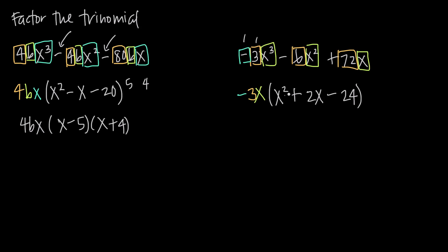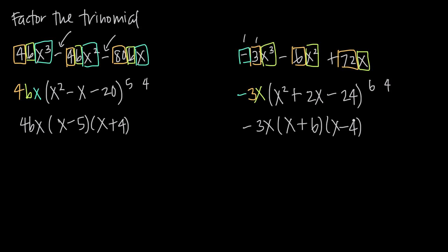So now, can we factor x squared plus 2x minus 24? And in fact, we can. We need to look for factors of 24 that are two apart from one another since the middle term is 2, and those would be the factors 6 and 4. So what we'll end up with is negative 3x times — because this is positive, our larger factor is going to need to be positive — so we'll get a positive 6 and a negative 4, giving us x plus 6 and x minus 4. And if we want to double check: x times x gets us back to x squared; x times negative 4 is negative 4x, plus 6x gives us positive 2x; and positive 6 times negative 4 does, in fact, give us negative 24. So we can see that we do get back to our original trinomial, which means that we factored correctly.